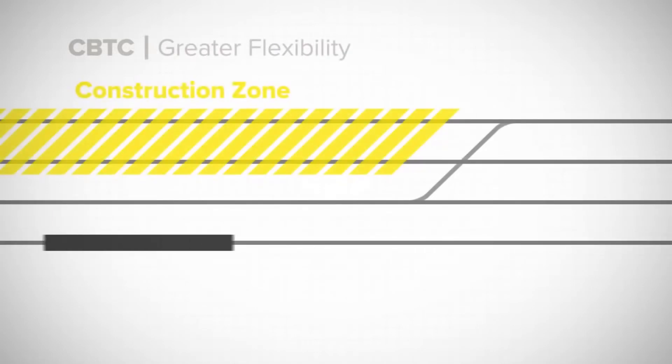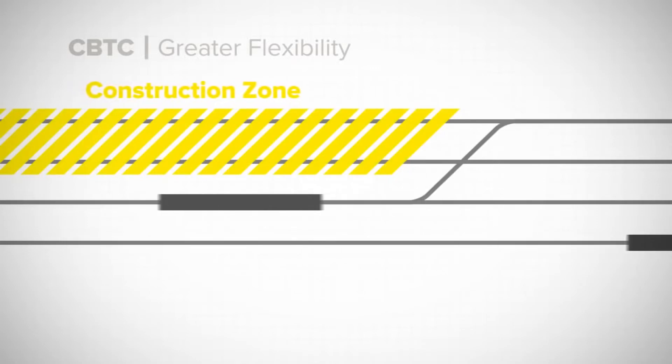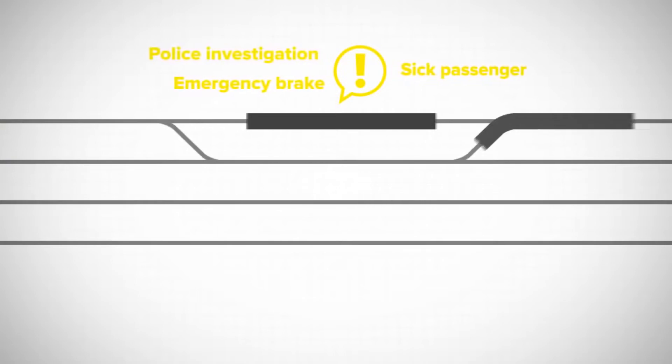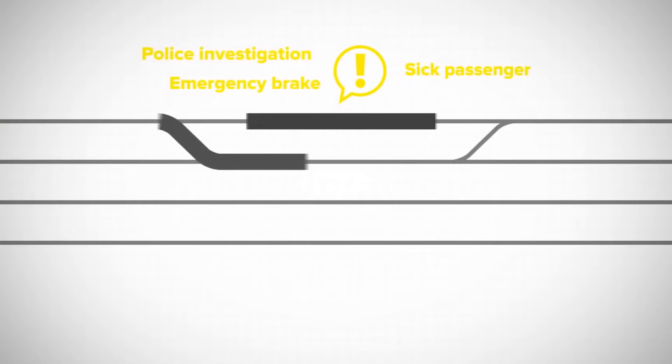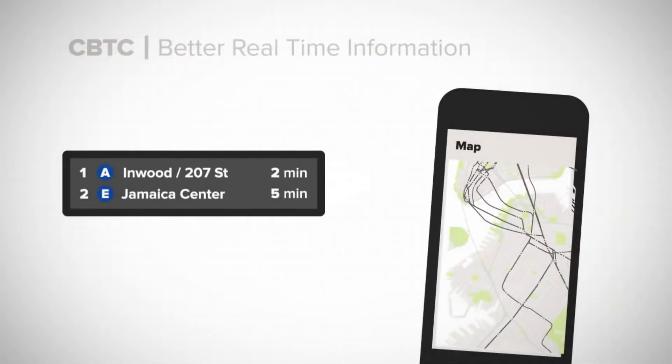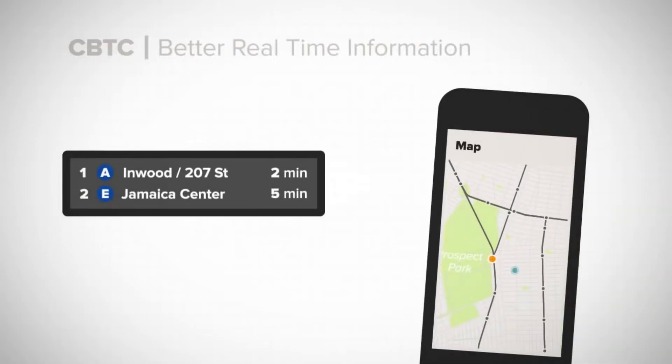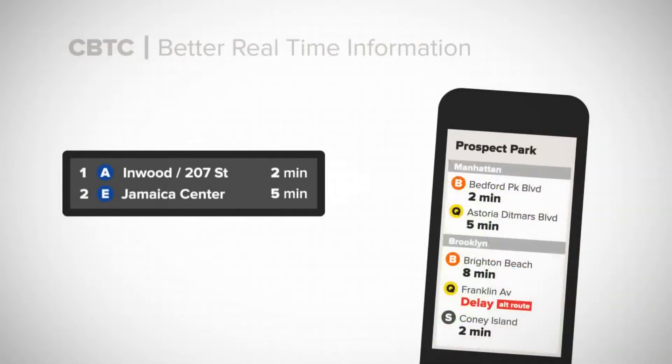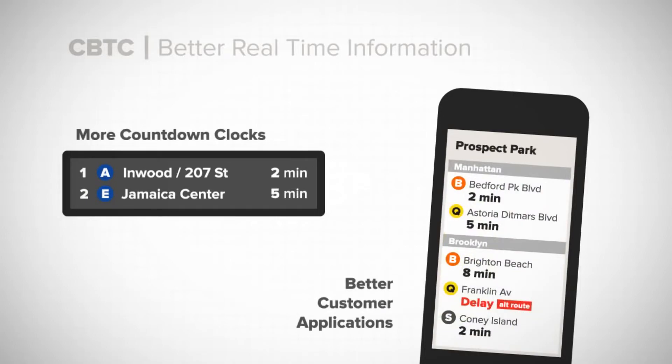Trains can operate in both directions on all tracks safely, creating greater flexibility to maneuver around work crews and respond to emergencies. Since the trains are all controlled centrally, service can be adjusted quickly along a single line. CBTC would provide subway riders with better real-time information, allowing for more countdown clocks and better customer applications.